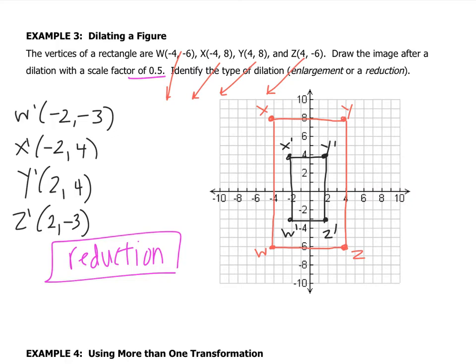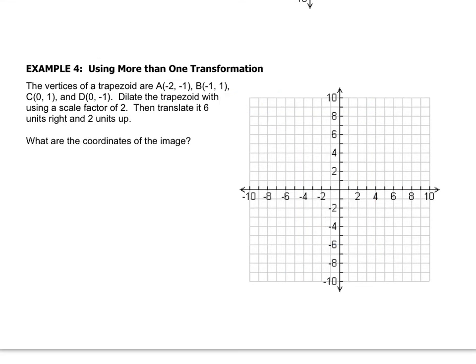Let's look at an example where you have more than 1 transformation. If you look at example 4, they give us a trapezoid. They want us to dilate the trapezoid by a scale factor of 2, and then translate it 6 right and 2 up. So the first thing that we're going to do is plot our trapezoid. Then we're going to dilate. Then we're going to translate. And then we're going to write the coordinates. So first thing is for you to freeze and plot the trapezoid.